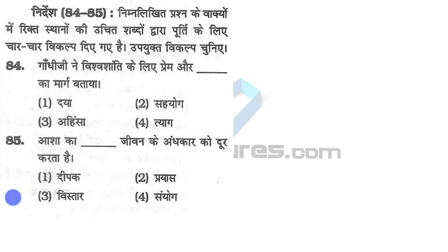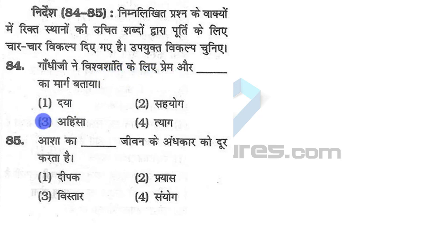The next section has sentences with blanks to be filled with the correct word. 'Gandhi ji ne vishwa shanti ke liye preem ar ahinsa ka mahar bataaya.' Ahinsa is non-violence, preem is love. So Mahatma Gandhi for world peace suggested love and non-violence — that is what the sentence is saying.